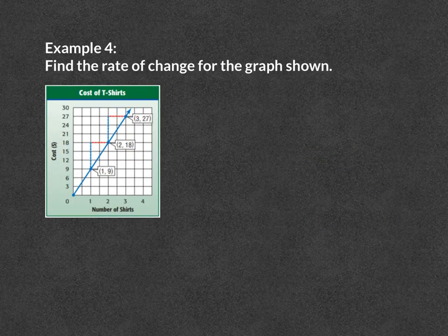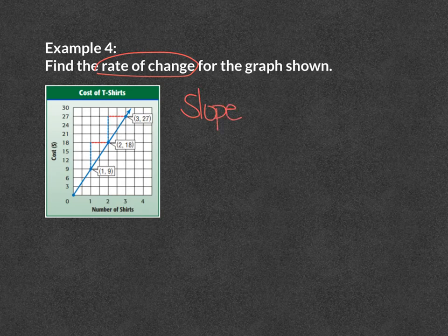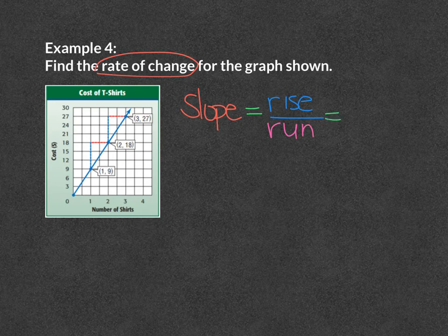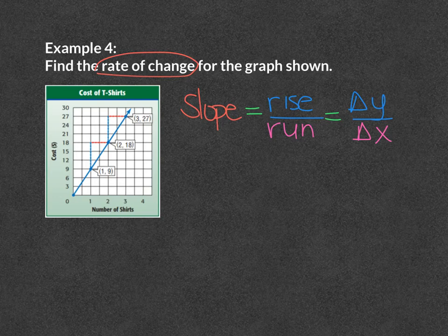Example number 4. Find the rate of change for the graph shown. Remember the rate of change is the same thing as slope, which is rise over run, and that is the same thing as the change in y over the change in x. I am going to look at the graph and pick two points. It doesn't matter which two points. I am going to pick (2, 18) and (3, 27).